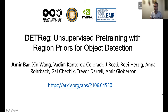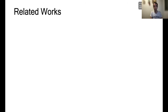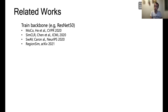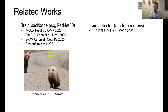Hi, everyone. Thanks again for having us. Our work builds on the previous one, and similarly our goal is to improve object detection using unsupervised pre-training. When we look at prior works, they are mainly focused on training backbones, which is very general, but misses a key aspect of object detection: detecting objects. If you plug in a backbone into an existing detection architecture, it won't produce anything meaningful without further training. Other works have attempted to learn to localize random regions, which also does not learn to detect meaningful objects in the pre-training stage.